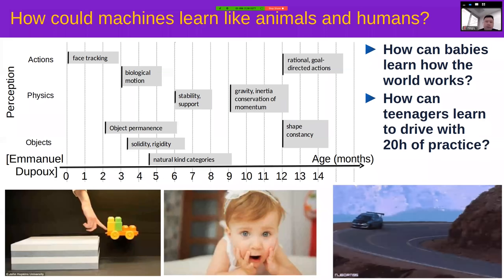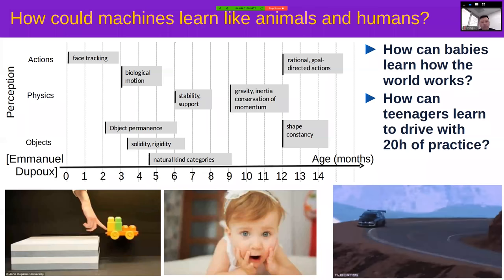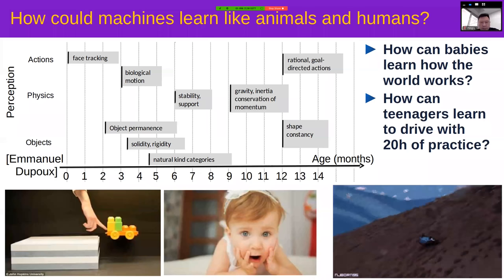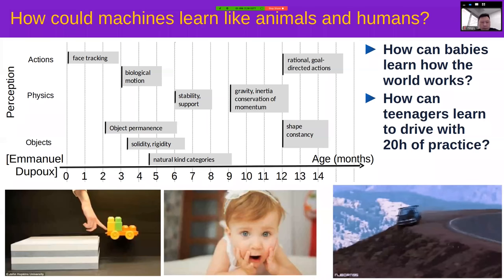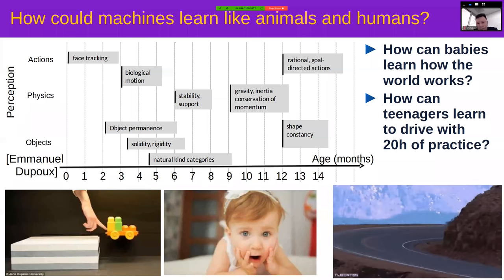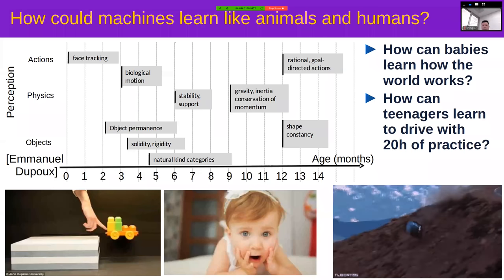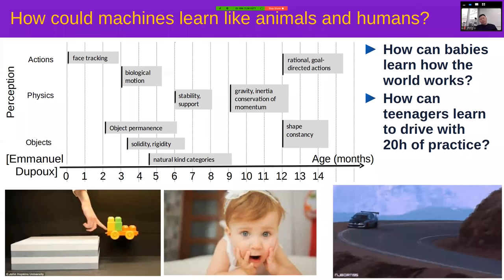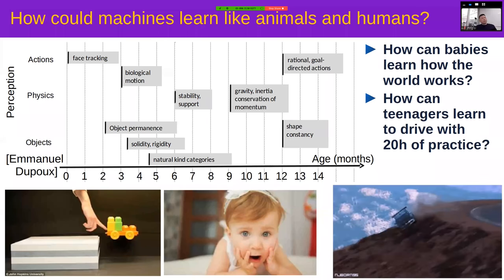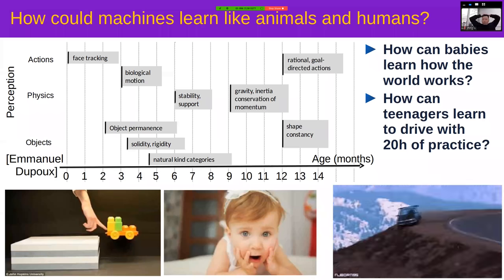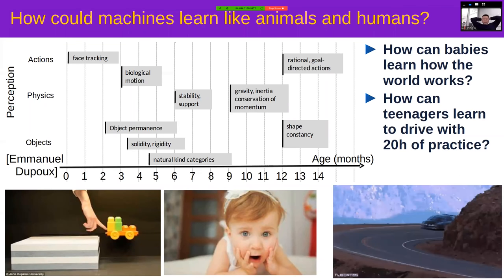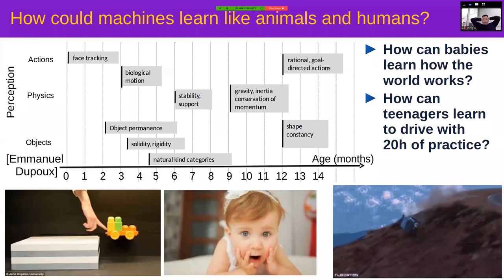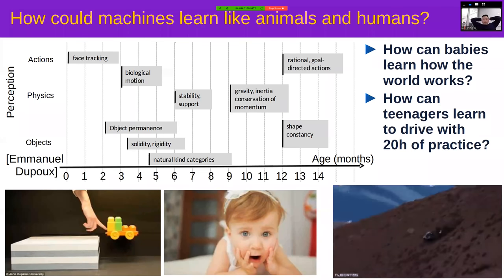If you show a nine-month-old baby a scenario where a little car moves off a platform and appears to float in the air, the baby will look very surprised and stare for a long time because her model of the world is being violated. But a six-month-old baby will not look surprised, because she has not yet acquired the notion that unsupported objects will fall.